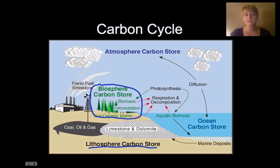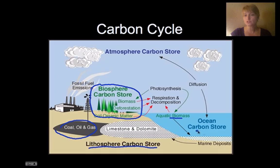On Earth we also have a lithosphere carbon store — that's all the carbon stored in the Earth itself. These resources are coal, oil, and gas. Limestone and dolomite also have carbon in them. We also have aquatic biomass and an ocean carbon store, with some dissolved carbon in the ocean.